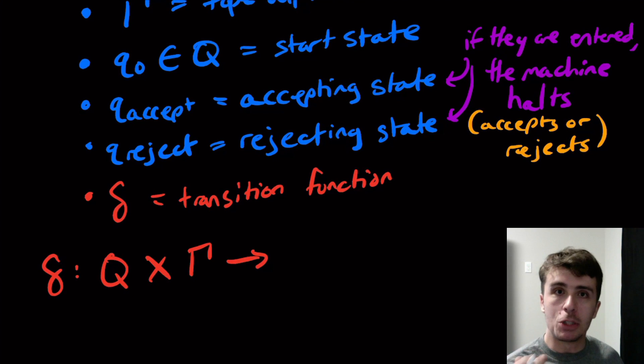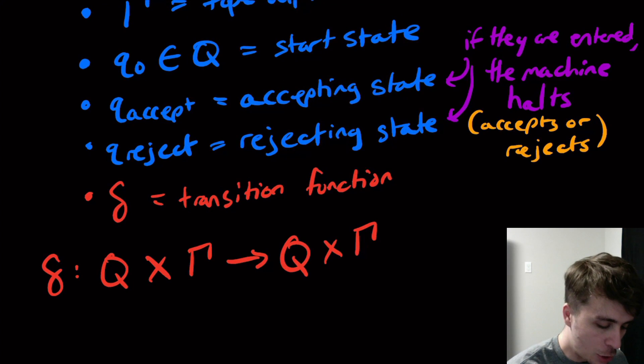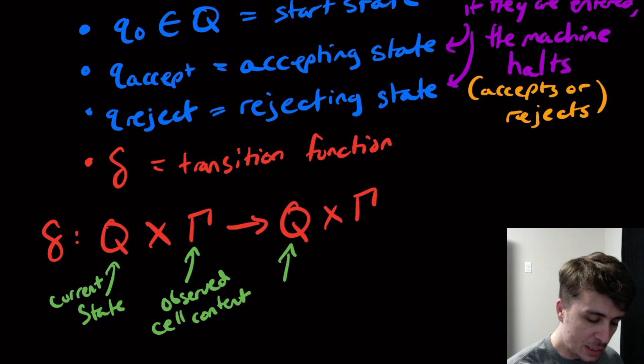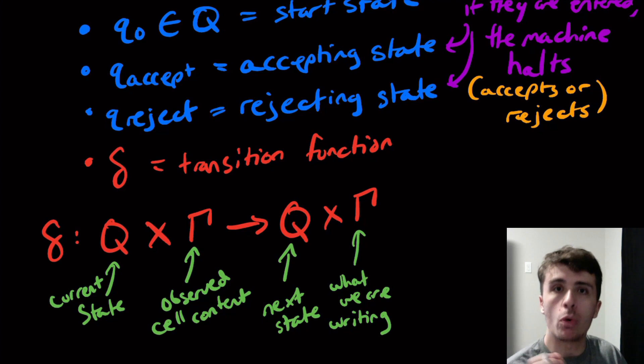Once we do that, we want this machine, for now at least, to be deterministic. We need to figure out what state to go to, so Q. We also need to figure out what to write into that cell we're looking at, so Q cross Gamma again. This is the current state; this is the observed cell content. This Q is the next state; this Gamma is what we're writing into that cell. It could be exactly the same thing, but we're always writing something into the cell.